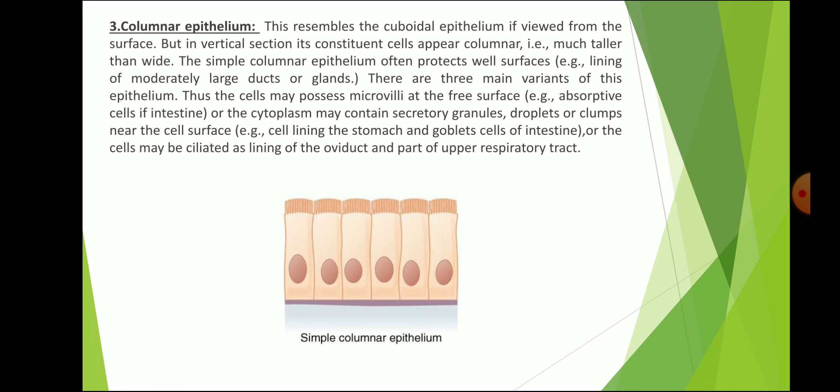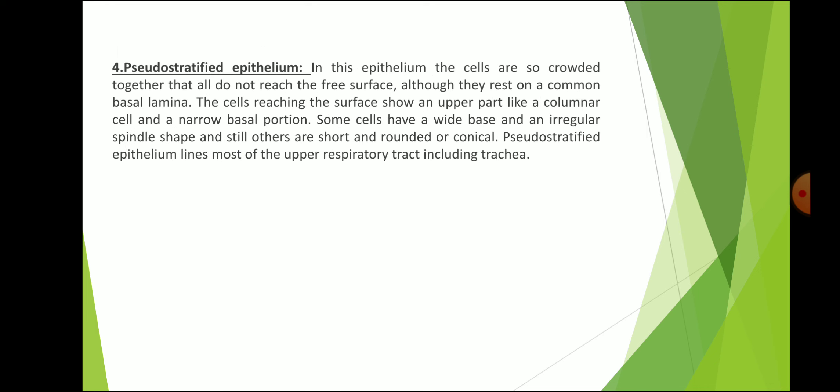Or the cells may be ciliated, as in the lining of the oviduct and parts of the upper respiratory tract. Columnar epithelium occurs at wet surfaces in regions where the epithelial lining combines other functions with that of a limiting membrane. Certain tall columnar epithelial cells become specialized to serve as sensory cells — neuroepithelium — for the reception of external stimuli, for example the gustatory cells of the taste buds.